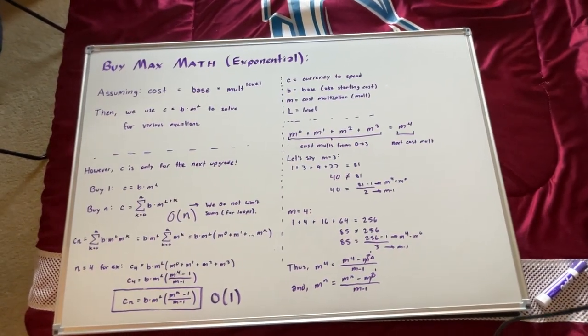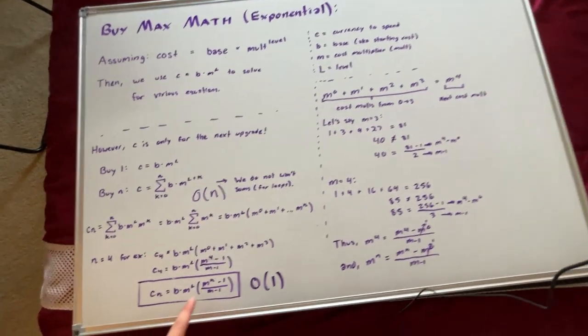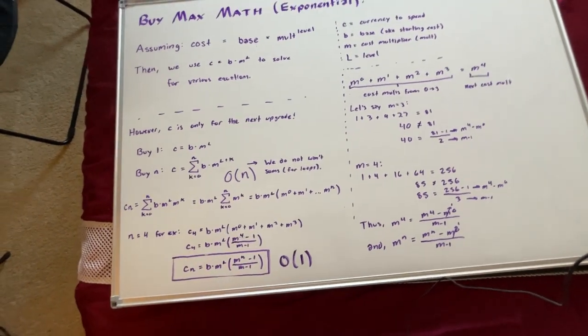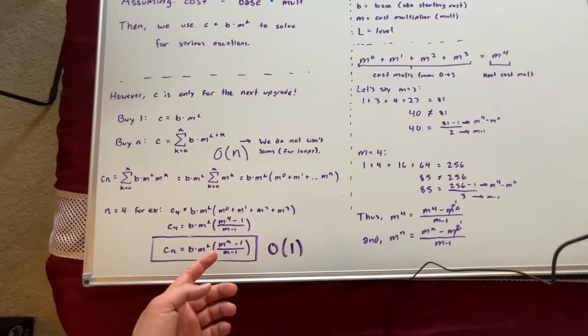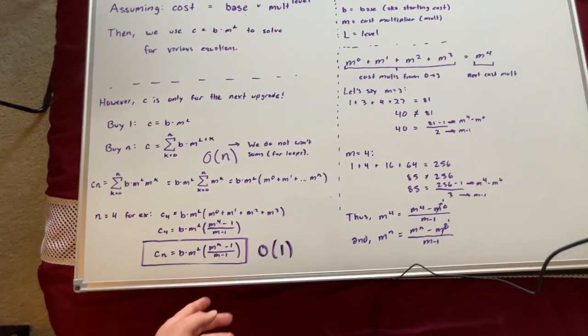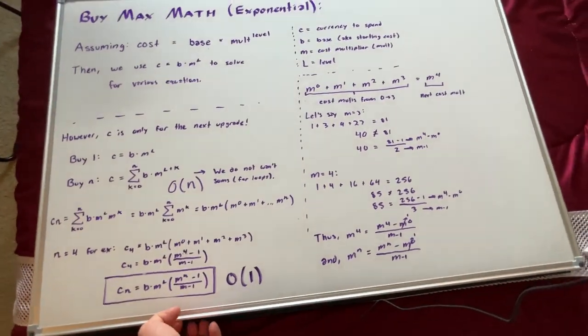All right, so we have our total cost. We need to figure out what n is because we don't know what that is. And the purpose of the buy max is to see what is the highest n we could get. So that's where the second whiteboard comes into play.